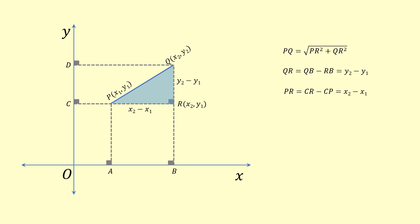Now we will simply substitute the value of pr and qr in this equation. And we will get pq is equal to square root of x2 minus x1 whole square plus y2 minus y1 whole square. This is called distance formula.